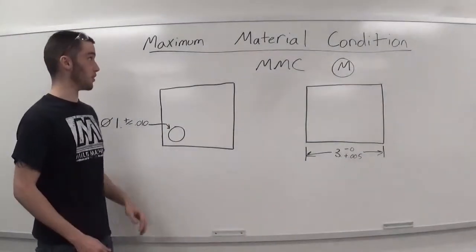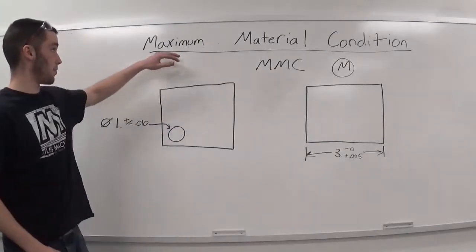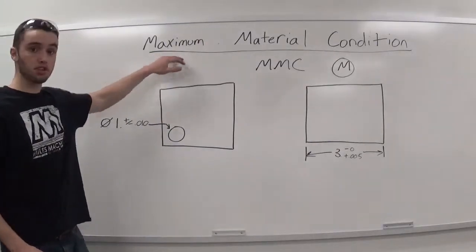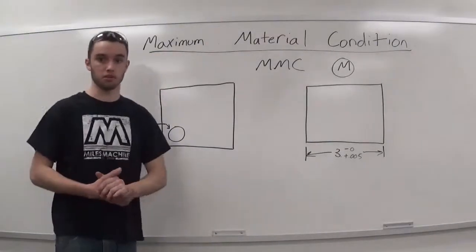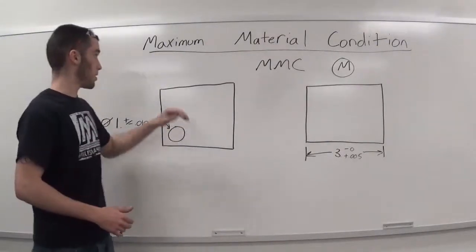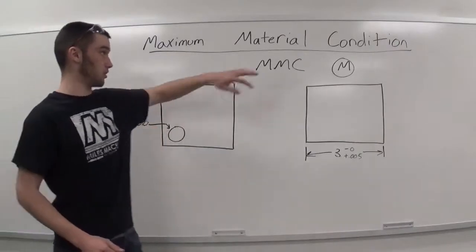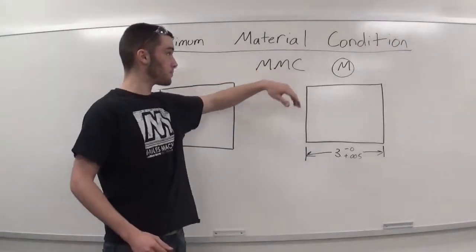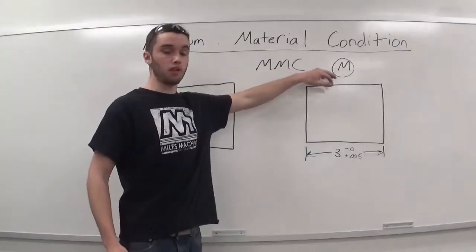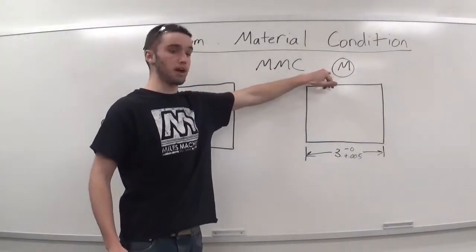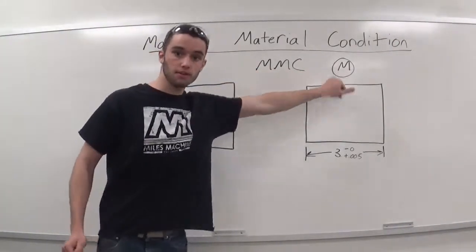In this lesson we'll be going over maximum material condition and least material condition. Maximum material condition, also known as MMC, is called out on a blueprint with an M with a circle around it.